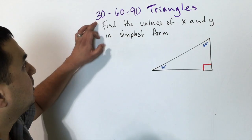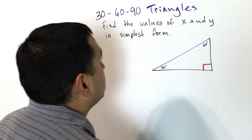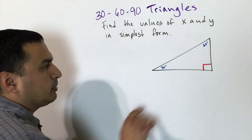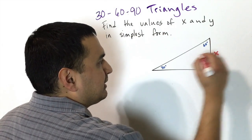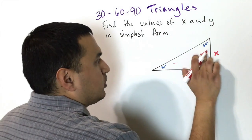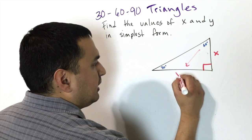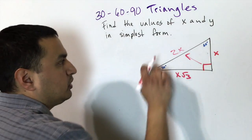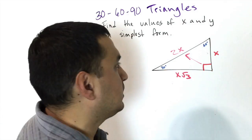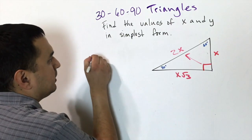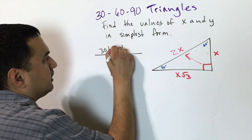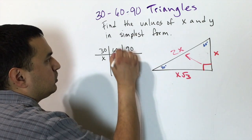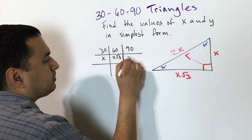The other special right triangle is the 30-60-90 triangle, with angles of 30°, 60°, and 90°. The smallest side — across the 30° angle — is called x. The side across the 60° angle is x√3, and the hypotenuse across the 90° is 2x, meaning the hypotenuse is always twice the shortest side. In table form: 30 → x, 60 → x√3, 90 → 2x.